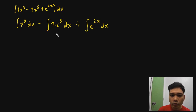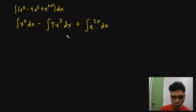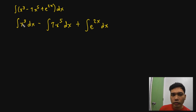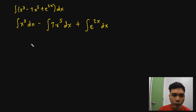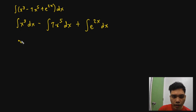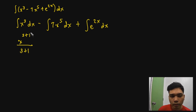Based on the rules we already mentioned, these three terms are separated by subtraction and addition, so we can just separate them. That makes this: the integral of x cubed dx, minus the integral of 7x to the fifth dx, plus the integral of e to the 2x dx. Now that I've separated all the expressions, I can simply integrate each of them.